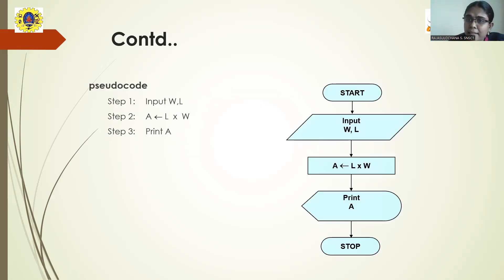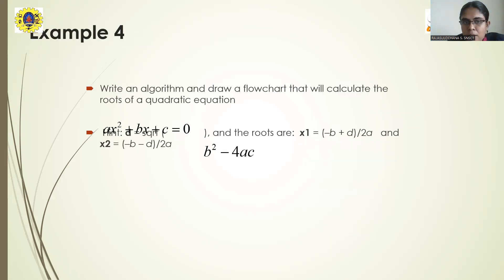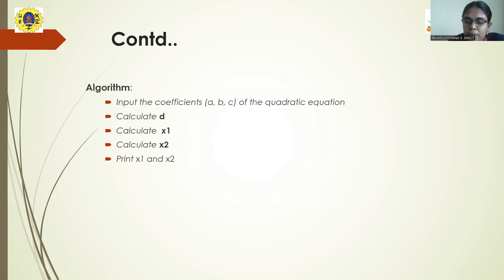This is for calculating the area of a rectangle. Initially, you have to get the input for length and width. Next, area = L * W. The next step will be printing the area. Hope you are clear with how to write an algorithm, how to draw a flowchart, and how to write a pseudocode for a given problem.